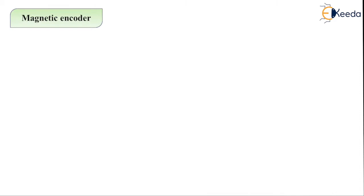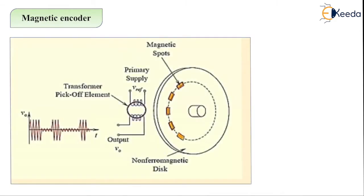Now let us focus on the magnetic encoders. What do you mean by magnetic encoders? The magnetic encoder saturates the core of the transformer, increasing the reluctance. This is a simple diagram for the magnetic encoder. You can see the magnetic spots here. This is the primary supply — it is the transformer unit — and here we are getting the output. This is the ferromagnetic disk. In the magnetic encoder, transformers are used, and here we can use a reference voltage V-reference and we are getting the output voltage V0.